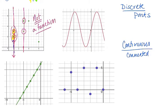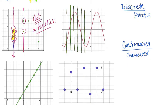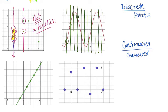The next graph is a sine curve — nice and wavy. If I take a vertical line and slide it across, I can never get more than one hit on the sine wave. For each input (each vertical line), I only get one output. So this one is a function, and it is continuous because it's connected.